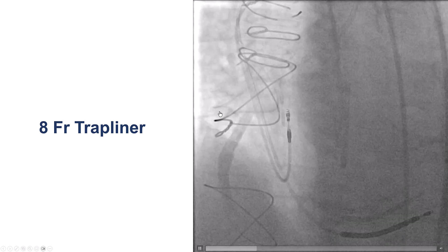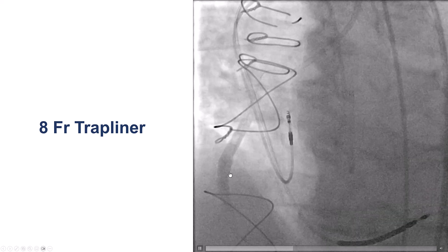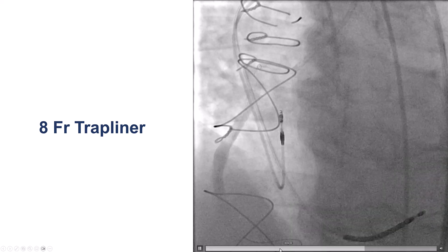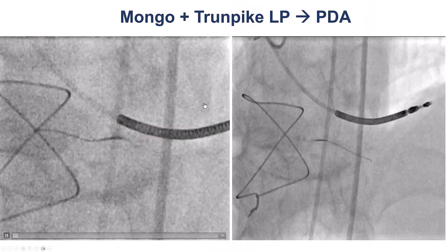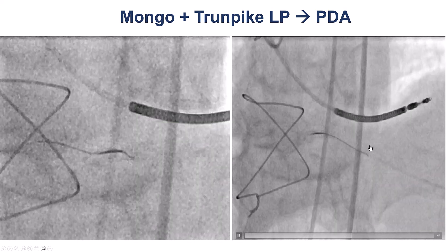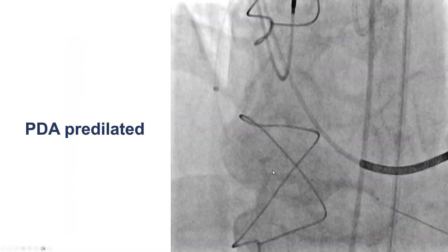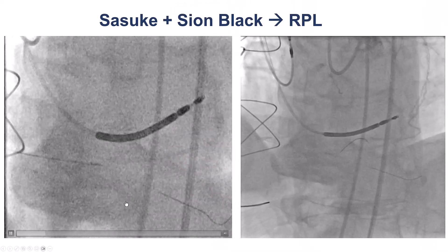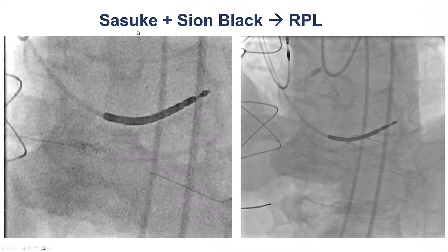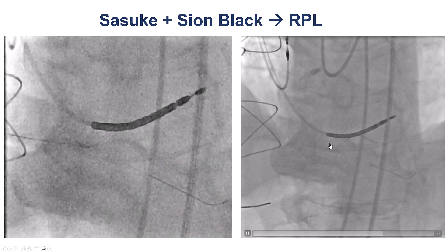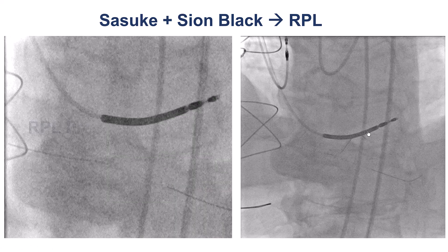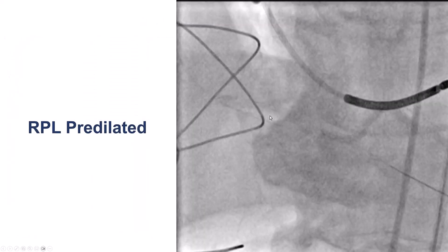We inserted an 8 French guide extension into the saphenous vein graft and advanced a guide wire, which went easily into the PDA. After doing that, we were able to predilate into the PDA, which restored some antegrade flow. We then used a dual-lumen microcatheter, a Suzuki, and advanced a Sion black wire into the right posterolateral.